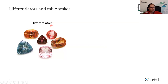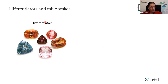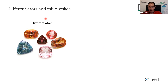To start, we're going to look at two definitions: differentiators and table stakes. What are differentiators? Differentiator features are your gems — these are the features that make people excited about the product and attract people to your product. It's a necessary condition to have. You cannot go out with a product-led MVP without having solid differentiators.